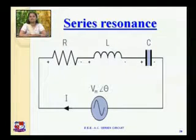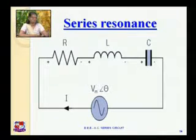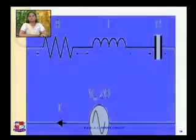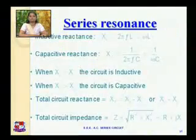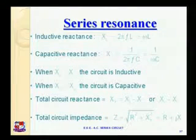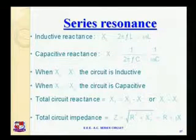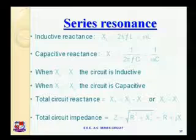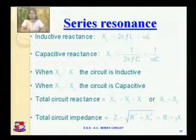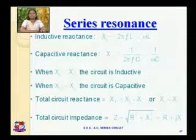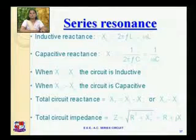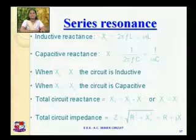Now we will discuss what happens in series resonance when XL is equal to XC. This is the basic information for RLC series circuit discussed earlier, just as a revision. Inductive reactance XL is equal to 2πfL, so it is directly proportional to frequency, which is equal to omega into L. Capacitive reactance XC is equal to 1 upon 2πfC, or 1 upon omega C, so XC is inversely proportional to frequency.